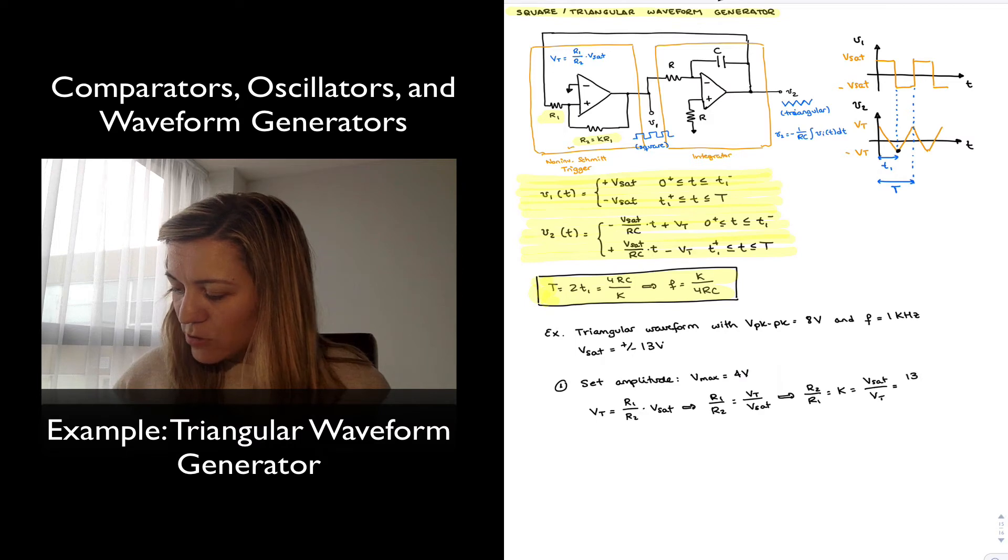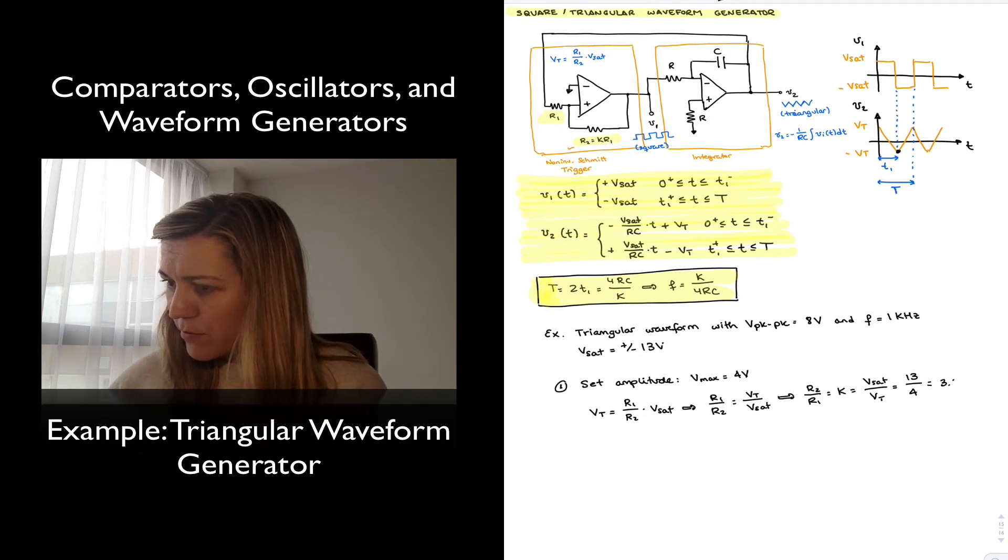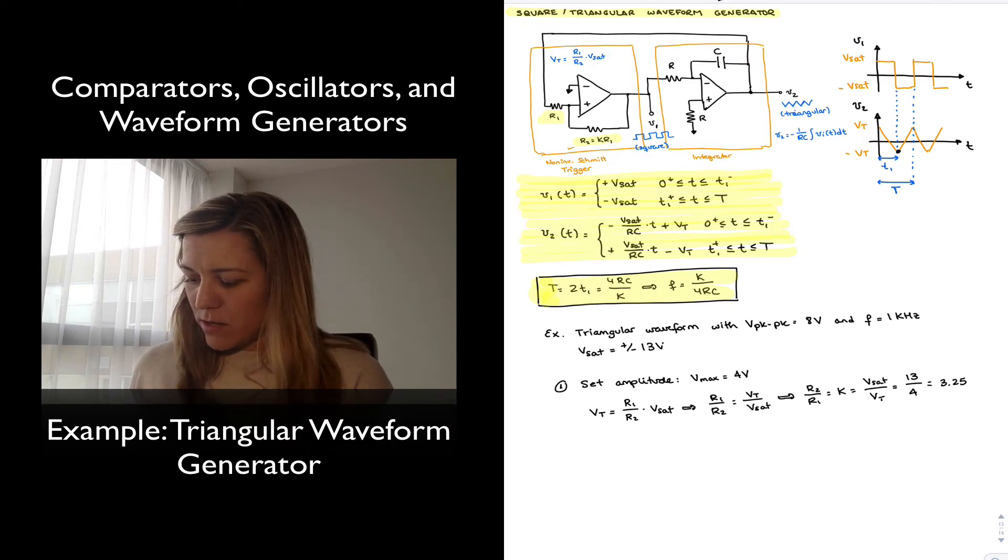Since Vsat is 13 volts, and Vt we want it to be 4 volts. That gives me 3.25. And so that's the ratio between R2 and R1, or what we've labeled as K.